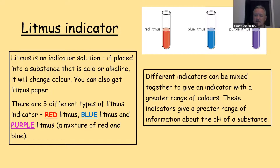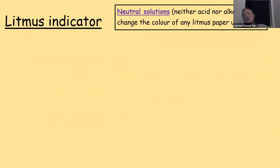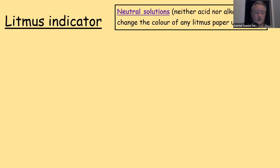These indicators give a greater range of information about the pH of a substance. Purple is an indicator that's been mixed from two other ones, so it can go two possible ways — red or blue from purple. If we put litmus paper into a neutral solution, which is neither an acid nor an alkali, it will not change colour. So if I'm using purple litmus, it will stay purple; if I use red or blue, it'll stay red or blue.